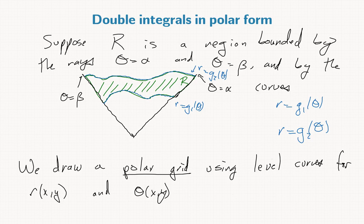When we draw a Cartesian grid, vertical lines are level curves of x equals some constant c, and horizontal lines are level curves y equals c. To draw a polar grid, we instead draw level curves for r, which are circular.